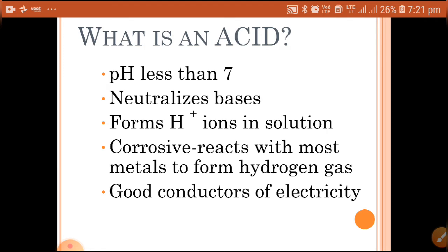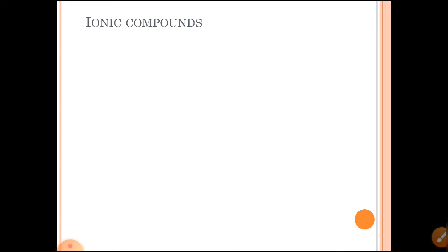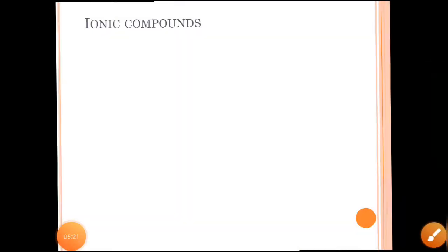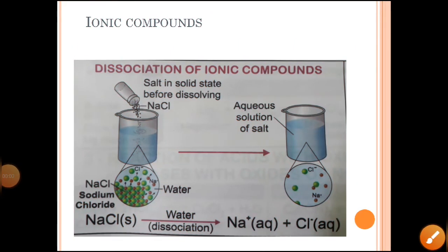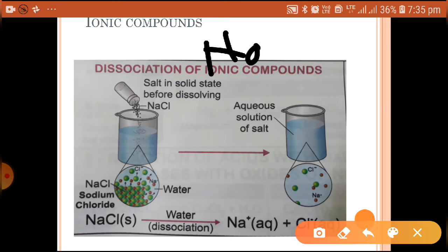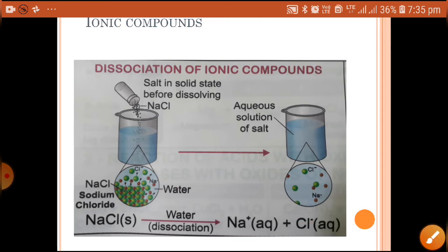Ionic compounds are those which have ionic bonds — formed by donation of electrons, like NaCl, as seen in the previous lesson. A molecule of an ionic compound has two constituents: a cation, which is positively charged (basic radical), and an anion, which is negatively charged (acidic radical). The force of attraction between cation and anion is known as an ionic bond. For example, in NaCl there is one Na⁺ and one Cl⁻, forming one ionic bond.